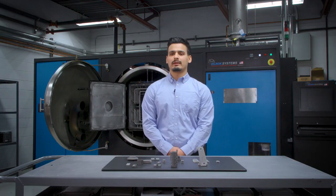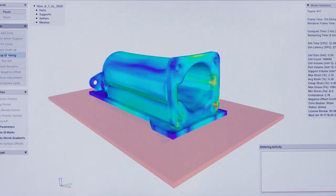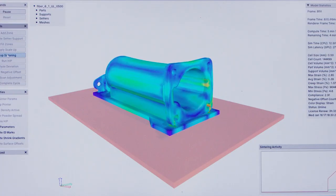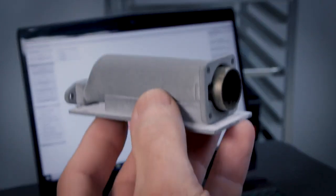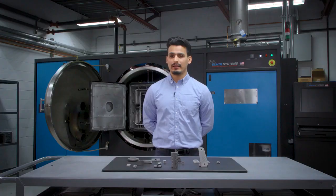Desktop Metal software is really what sets them apart from the competitors. They offer an entire suite of options. Now with Live Sinter and the ability to assume the distortion and create a part that adjusts for that is a game changer for binder jet printing.